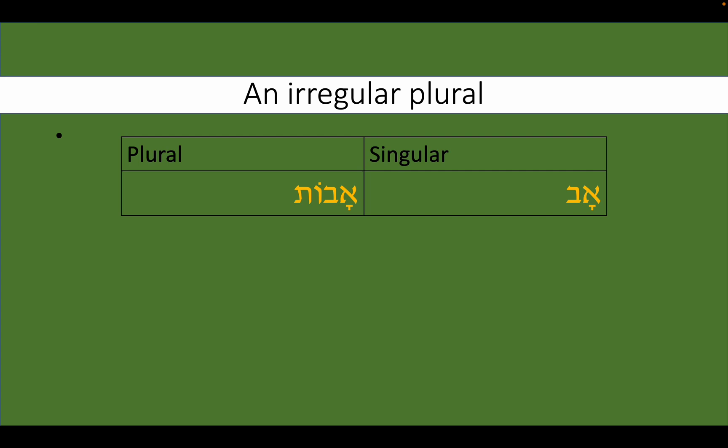An example of an irregular plural is with the word av, meaning father. In the plural form, it's avot, which here has a feminine ending, though obviously av is a masculine word. Avot.